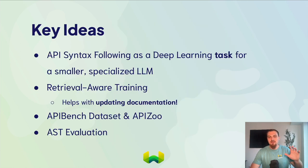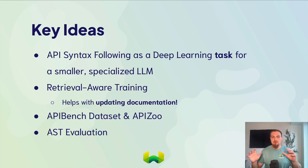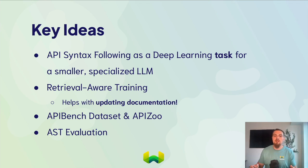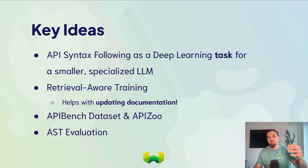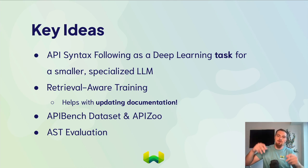In conclusion, here are some key ideas. First, API syntax following is a deep learning task for a smaller specialized large language model. Second, the use of retrieval-aware training — I think this is the first paper I've seen that's really doing this in an exciting way, integrating retrieval into training. Not in the end-to-end differentiable sense, but using retrieval to supplement inputs and reduce hallucination by turning the task basically to copying — looking at the input window rather than having all information memorized.